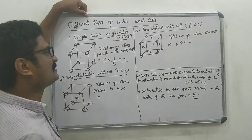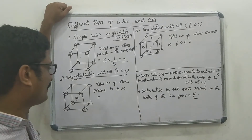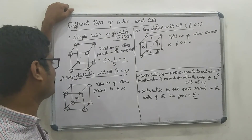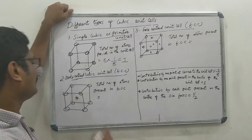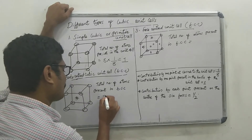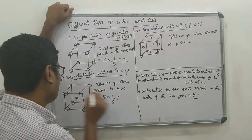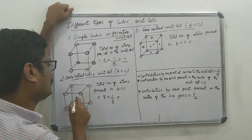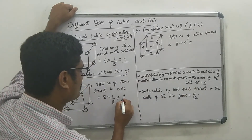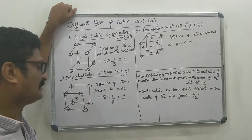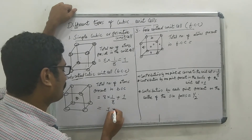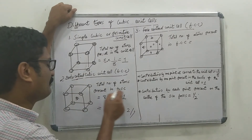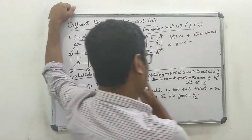The total number of atoms present in the simple cubic unit cell is 1. For BCC: 8 corner atoms × 1/8, plus 1 atom present at the center of the unit cell, gives 1 plus 1 equal to 2. The total number of atoms present in BCC is equal to 2.